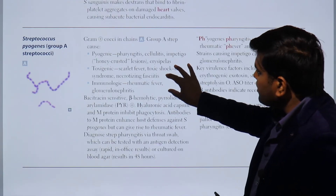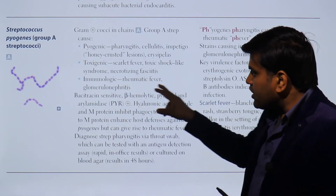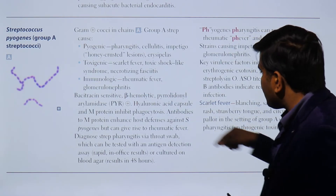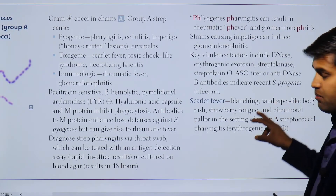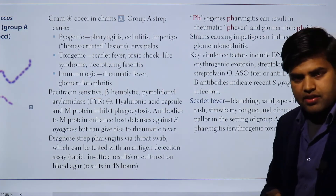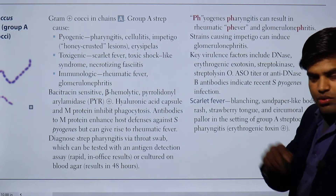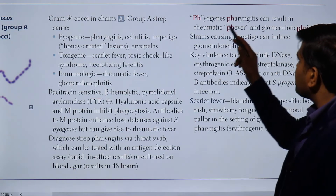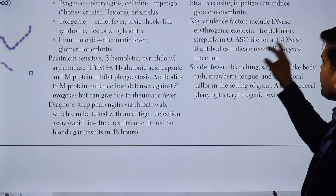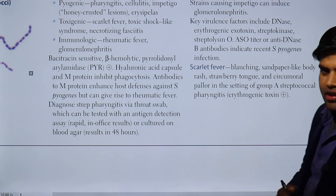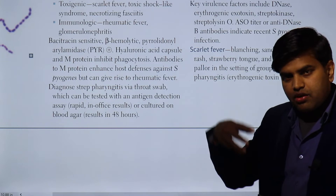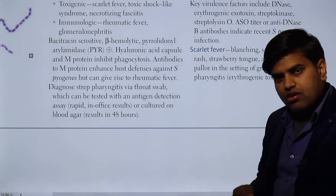To summarize Streptococcus pyogenes: it causes pharyngitis and is responsible for immunological diseases. It also causes cellulitis, impetigo with honey-crusted lesion. Scarlet fever is toxigenic, presenting as blanching sandpaper-like body rash with strawberry tongue. The skin strain only causes glomerulonephritis, while the pharyngeal strain causes both rheumatic fever and glomerulonephritis. Detection by ASO titer and anti-DNase B antibody indicates recent infection. Active infection can be confirmed by culture.